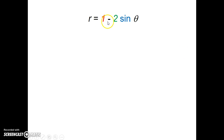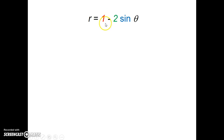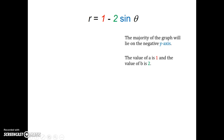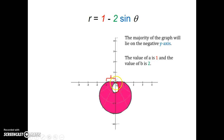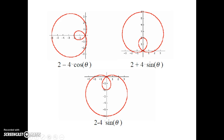Let's graph R = 1 - 2 sin theta. A is 1, B is 2, so A is less than B — we're definitely going to have a loop. With minus sine theta, the majority of this graph lies on the negative y-axis. The distance from the pole to the end of the loop is 1, the distance from the end of the loop to the end of the limacon is 2, and it intersects the x-axis at a distance of 1 to the right and left.